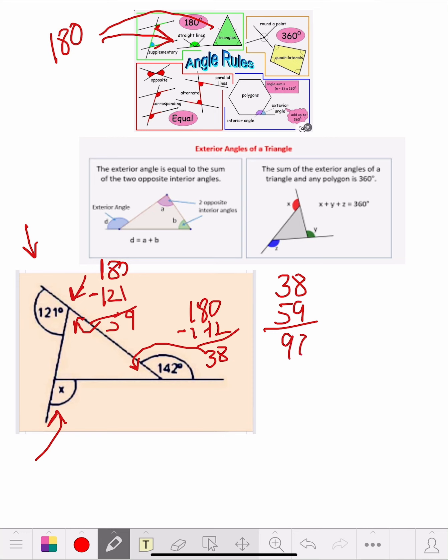So now we take 180. Then we got 97. That means 83. So this inside angle here is 83. We got that.